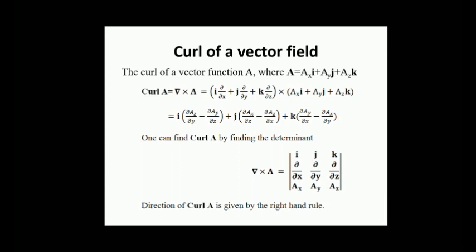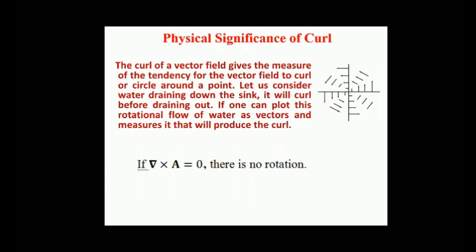The physical significance of curl: the curl of a vector field gives a measure of the tendency for the vector field to curl or circle around a point. Consider water draining down a sink — it will curl before draining out. If one plots this rotational flow of water as vectors and measures it, that will produce the curl. If a small ball is located within a fluid flow with its center fixed at a certain point, the fluid flowing past it will make the ball rotate, and the rotation axis points in the direction of the curl of the field at the center of the ball. If del cross A equals zero, there is no rotation; for example, the curl of an electrostatic field is zero: del cross E = 0.